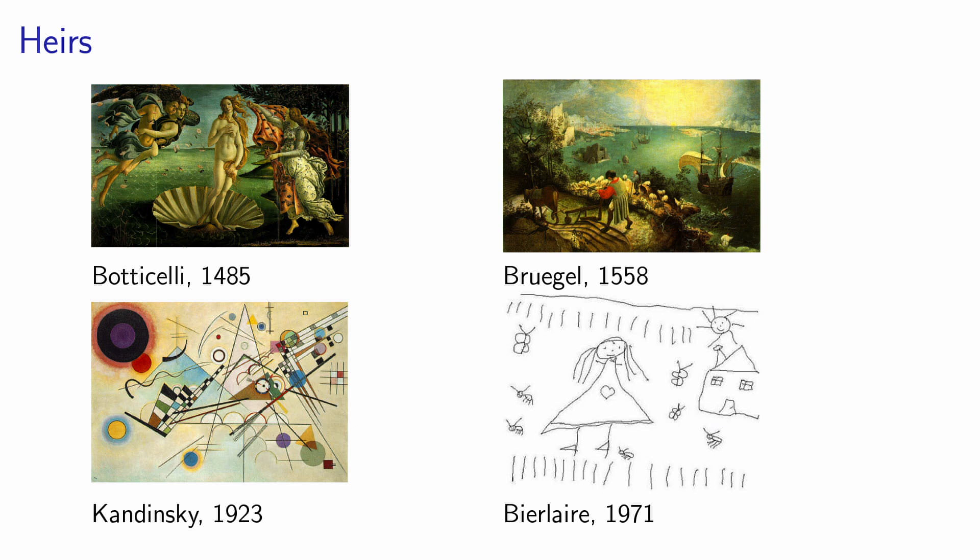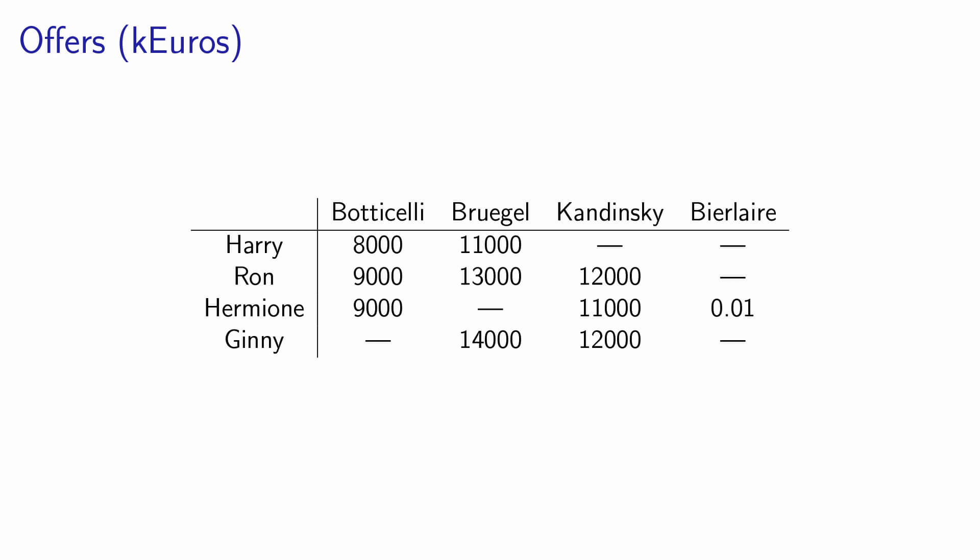Let's take an example. After the death of her husband, my grandmother discovered four masterpieces in her attic. She does not want to keep them — she would like to sell each of them to one of her four children. She has asked each child to make an offer for the masterpieces of interest. Now she wants to sell exactly one masterpiece to each child, but she would like to maximize the revenue from this assignment. So what masterpiece should she sell to what child in order to maximize the revenue?